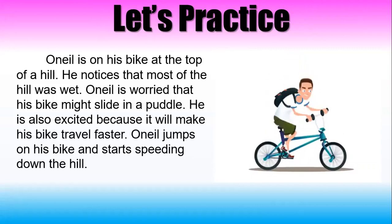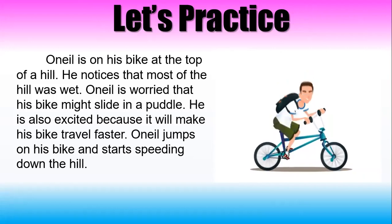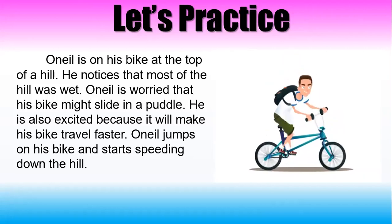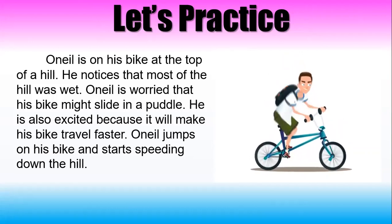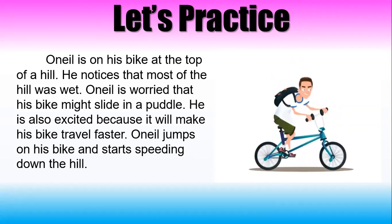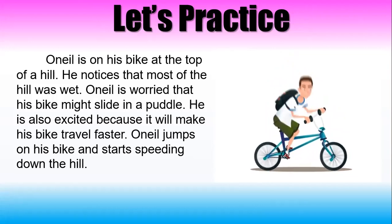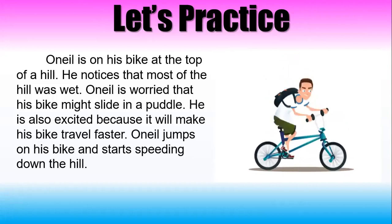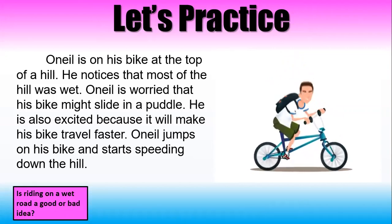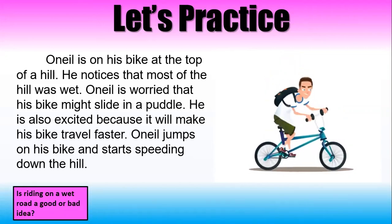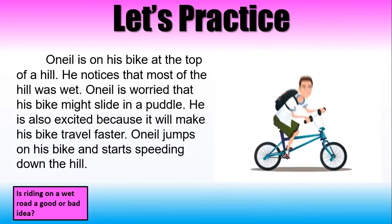Now I'm going to read it a second time and I want you to follow along. O'Neill is on his bike at the top of a hill. He notices that most of the hill was wet. O'Neill is worried his bike might slide in a puddle. He is also excited because it will make his bike travel faster. O'Neill jumps on his bike and starts speeding down the hill. Now we're going to ask ourselves some questions and try to make a connection with this story to help us form our opinion and make a final judgment.